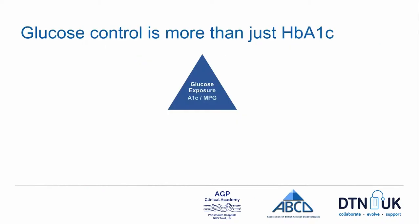Whilst the average of glucose levels is certainly important and we know that this builds up to our overall risk over time, we have to recognise that glucose control is much more than just that haemoglobin A1c average. And so we need to take into account measures of glucose change, or glucose flux. These measures naturally fall into two categories.